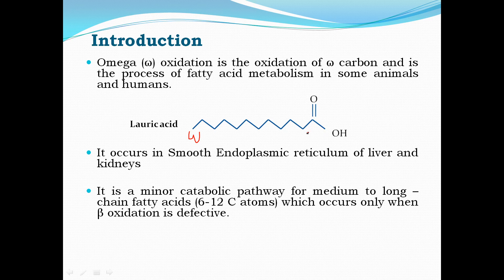You have already learnt about alpha oxidation as well as beta oxidation. The alpha carbon is the carbon present adjacent to the carboxylic end, and the beta carbon is the one present adjacent to the alpha carbon. Alpha oxidation takes place in the peroxisomes, beta oxidation takes place in the mitochondria, and omega oxidation takes place in the smooth endoplasmic reticulum of liver and kidney.